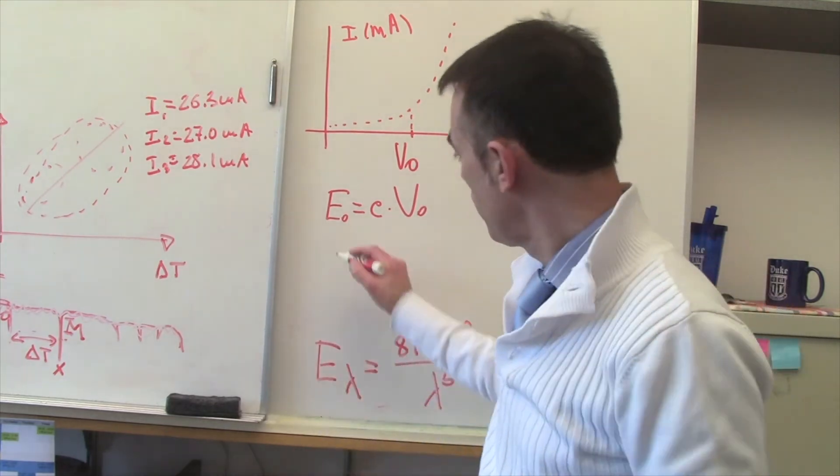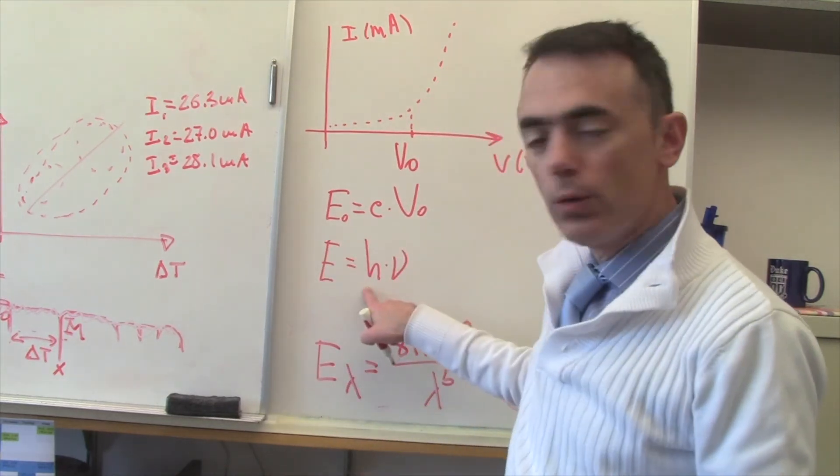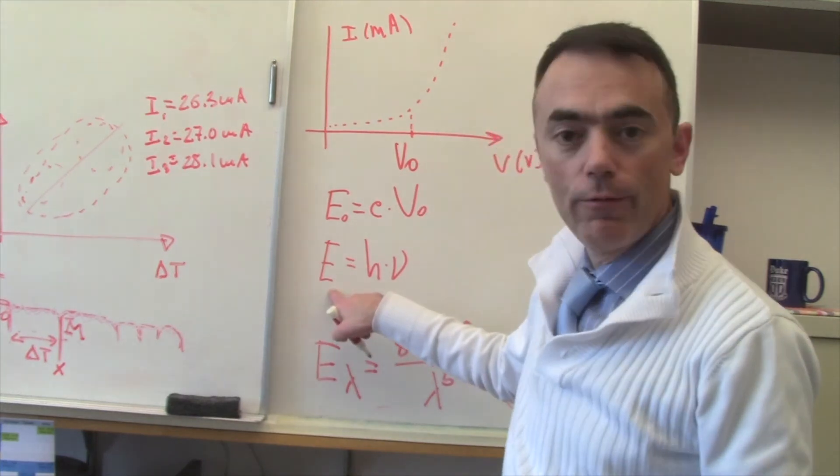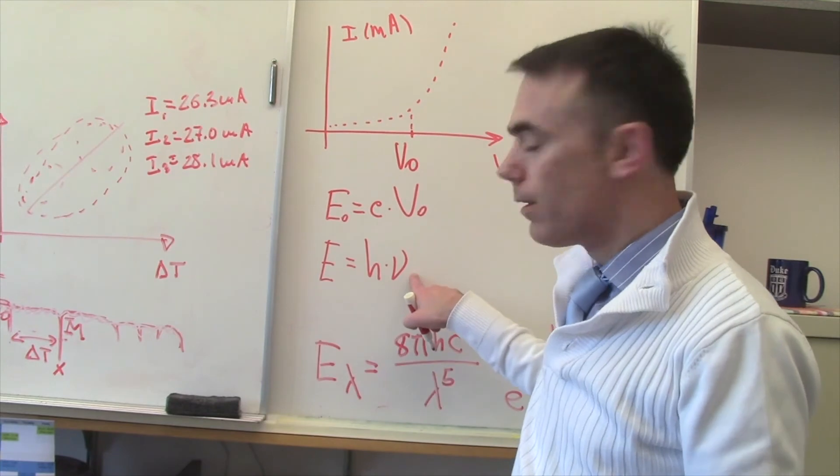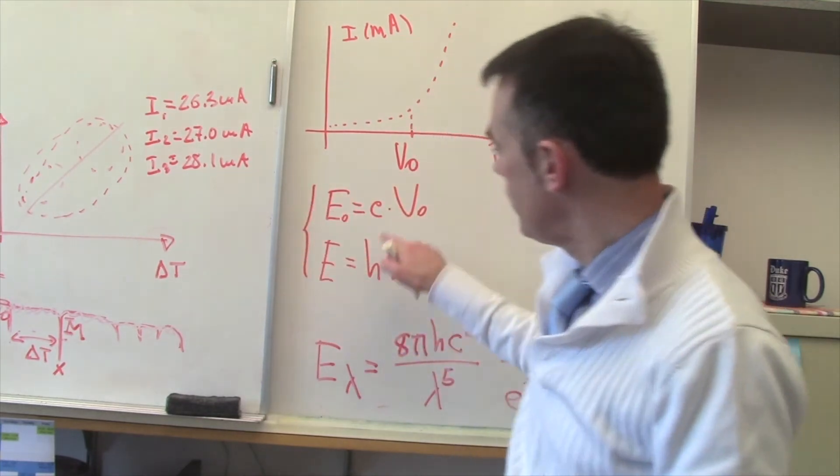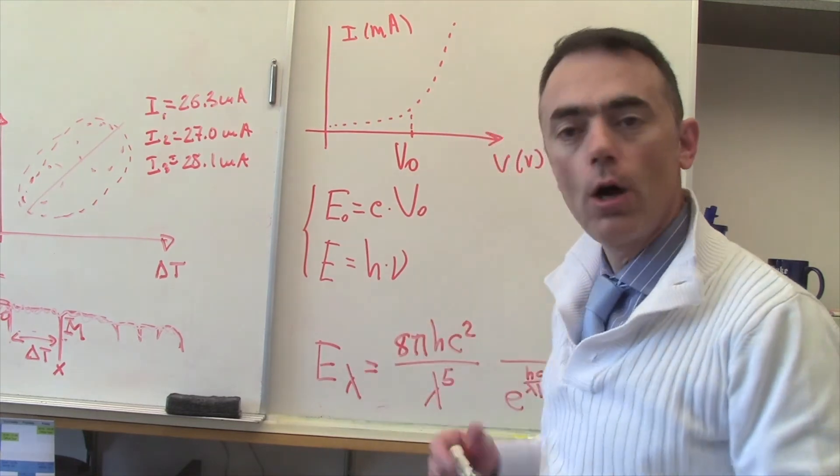Then, using Planck's relationship that tells us that the energy is equal to H times ν—the energy of the photon is equal to H, which is Planck's constant, times the frequency—you can relate these two expressions and figure out a way to determine H constant.